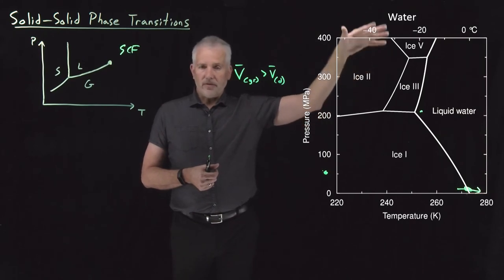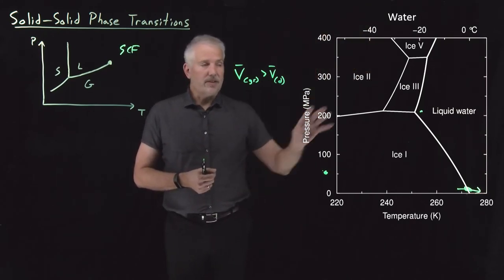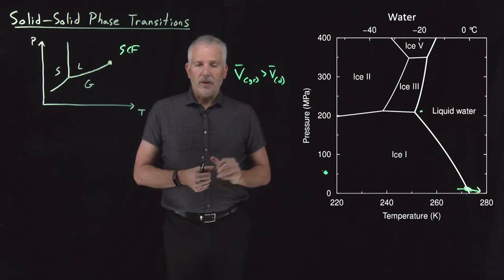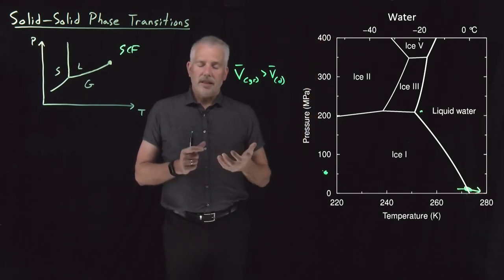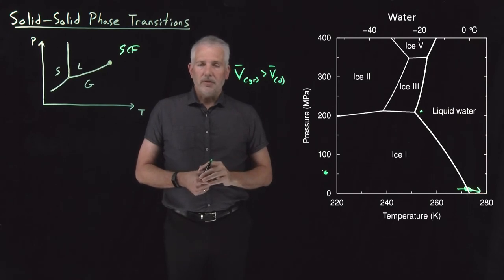In fact, the numbering of these phases goes as high as I think ice 18 is the highest phase that's been identified so far. There's at least 18 different phases of solid water distinguished by these different arrangements of their molecules.